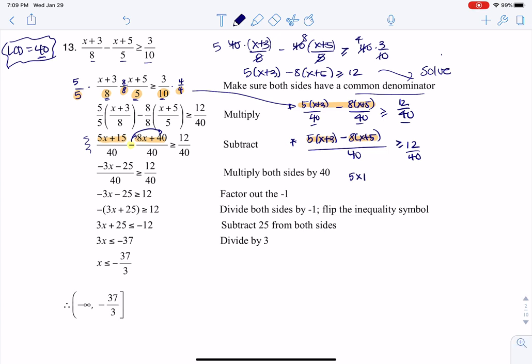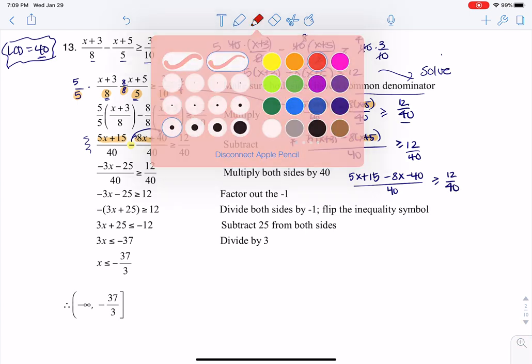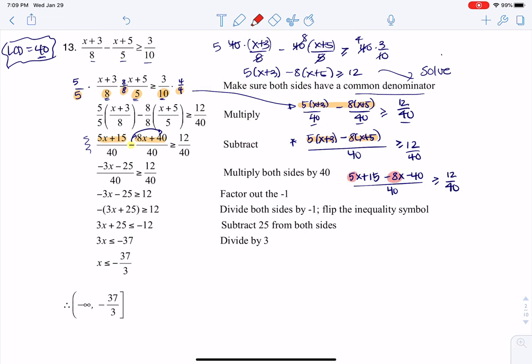So let me go one step further with this. This would have been 5x plus 15 minus 8x minus 40, and that would have been over 40 is greater than or equal to 12 over 40, right? So when I start to collect like terms, 5x minus 8x is negative 3x, right? And positive 15 minus 40 is negative 25. So that's where those numbers are coming from. So I get negative 3x minus 25 over 40 is greater than or equal to 12 over 40. So I'm at this step.